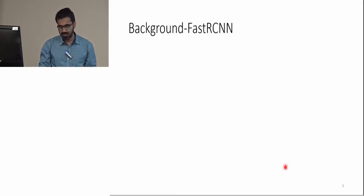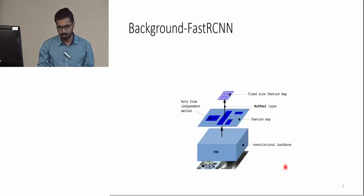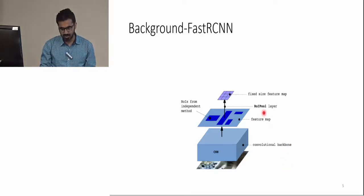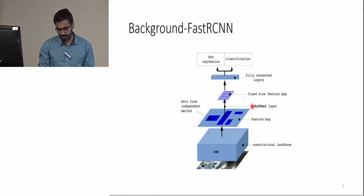Fast R-CNN did a number of changes to this pipeline. First, it replaced the resizing operation with this ROI pool layer to get a fixed-size feature map. Second, it replaced the SVMs with a fully connected layer. Now, a fully connected layer is responsible for classification and bounding box regression.